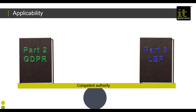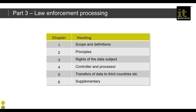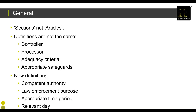A difficulty for many organisations who are competent authorities is balancing what they do under Part 2 with the requirements of Part 3. For instance, a police force must manage their workforce — HR, finance, payroll — in accordance with Part 2, while the personal data they process for a law enforcement purpose is covered by Part 3. As we go through the next 40 minutes, you'll find there are differences. Part 3 itself covers six chapters.